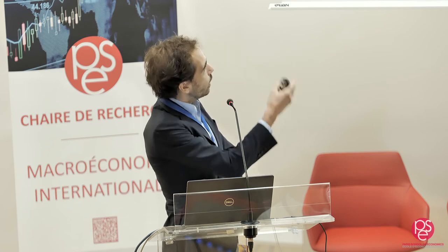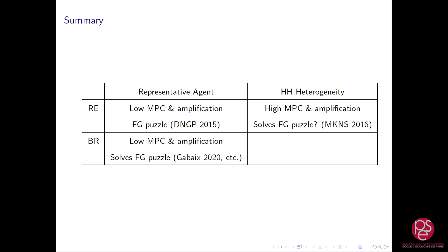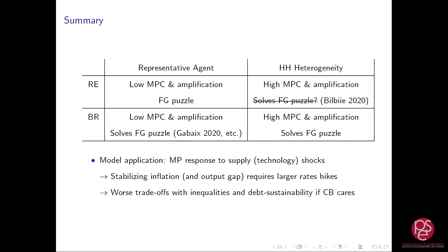It turns out that heterogeneity alone doesn't really work — as shown by Florence's paper and Ivan Werning's paper — because to fix the forward guidance puzzle with heterogeneity you need additional assumptions on pro-cyclical risk not found in the data. If you want to solve all the problems, you need both assumptions, and this is Olivier's paper. They then look at the implications: if you have a cost-push or supply shock, you would need to increase rates much more because everything you do at the long end of the yield curve doesn't have as strong an effect.